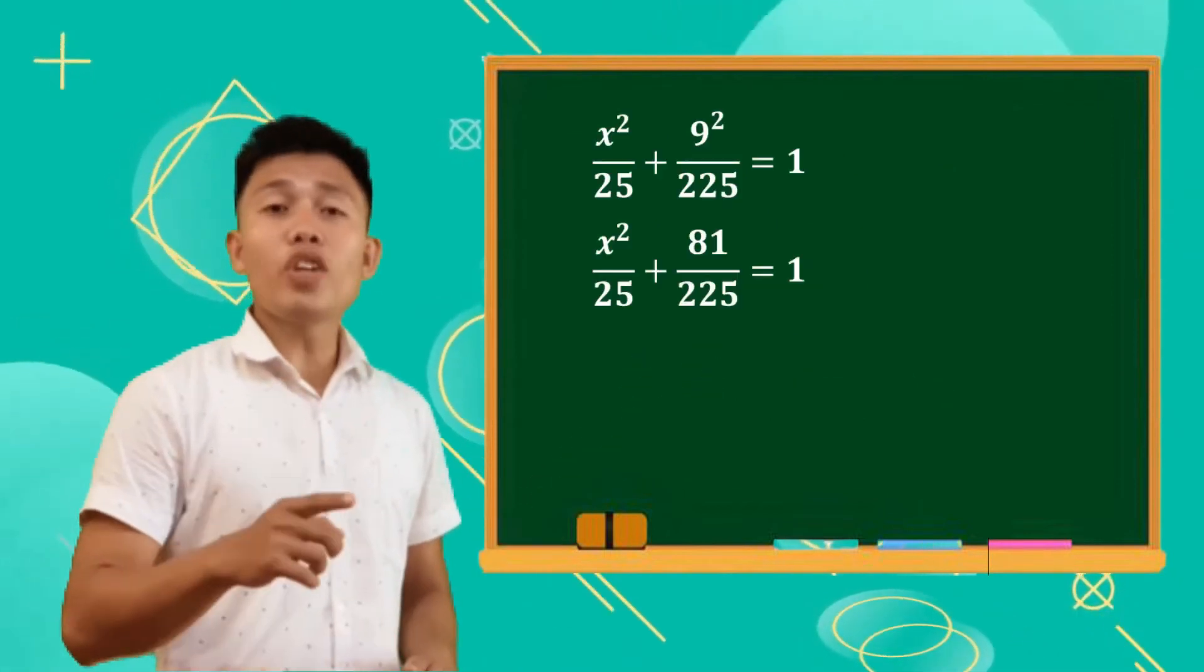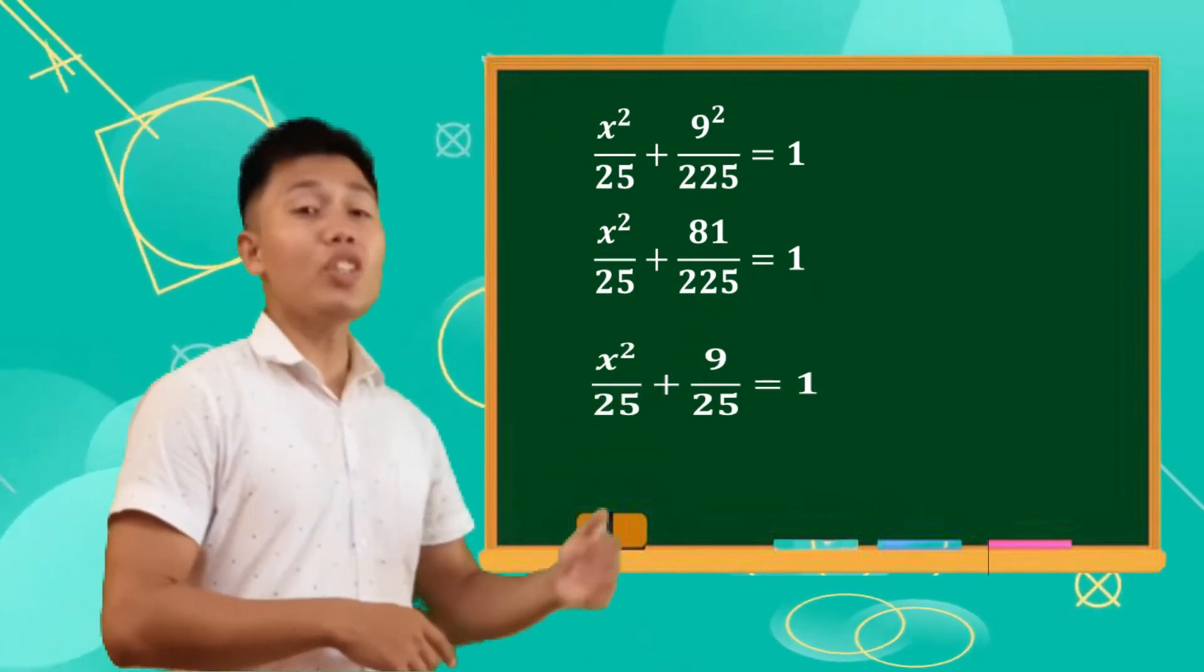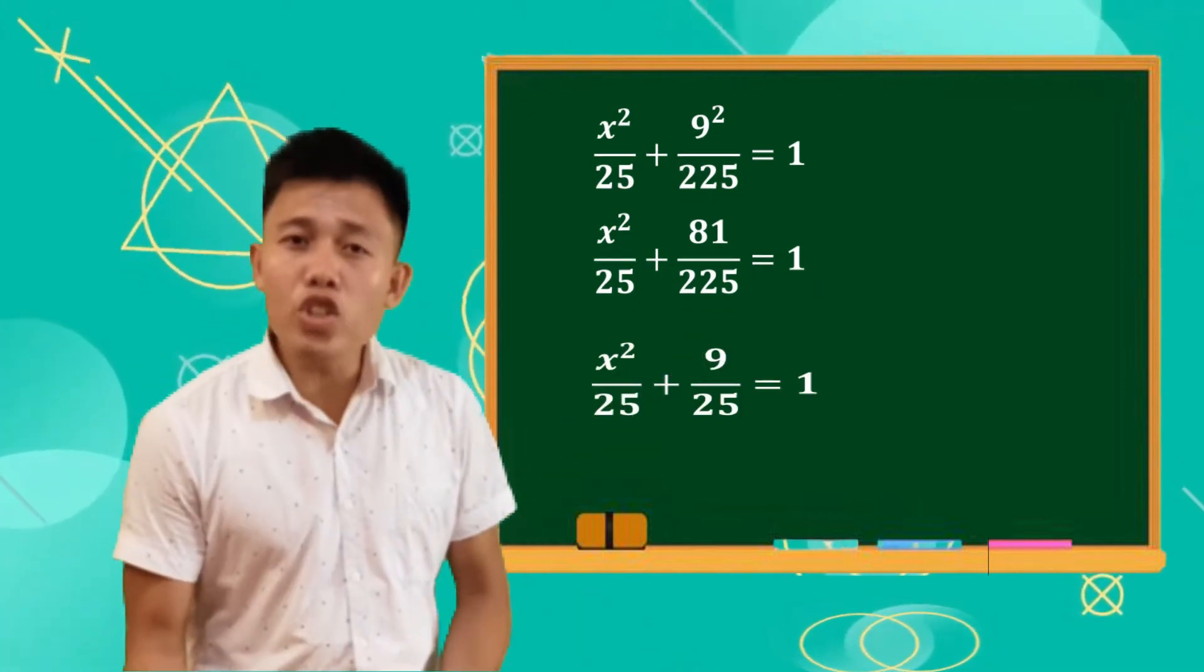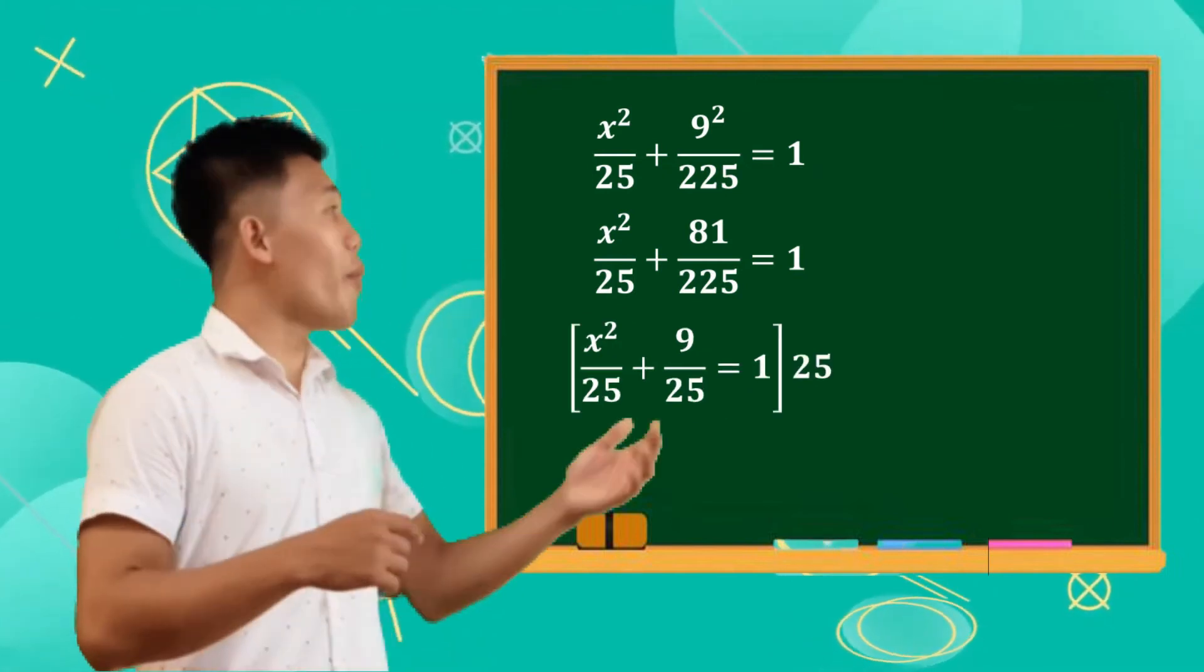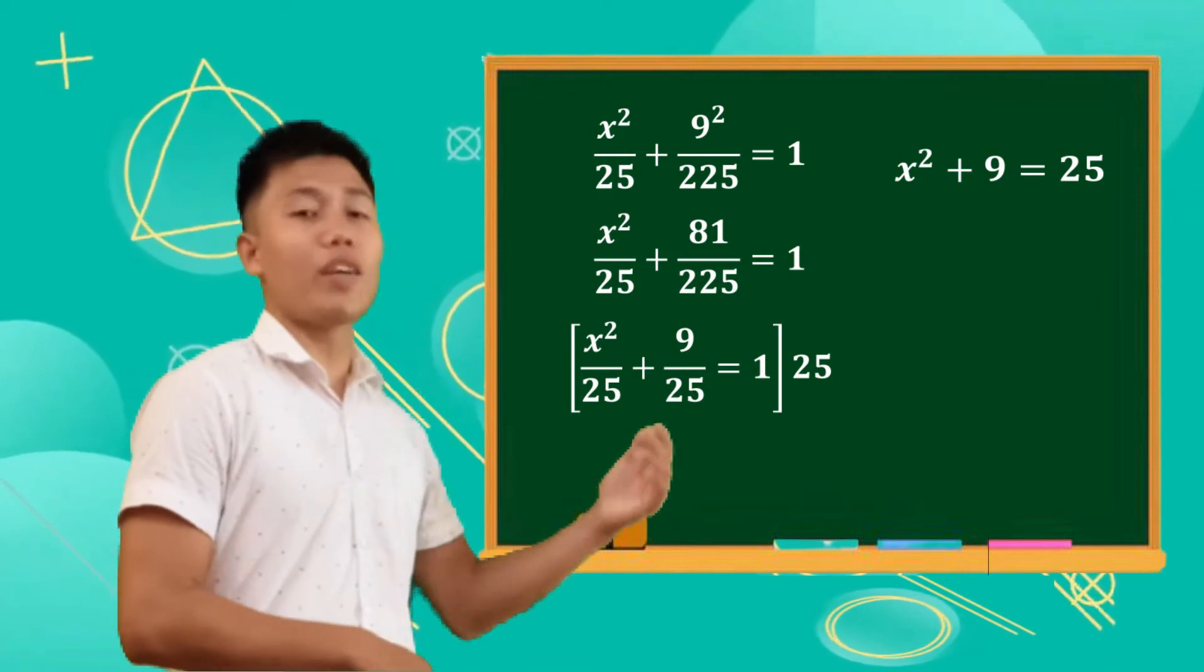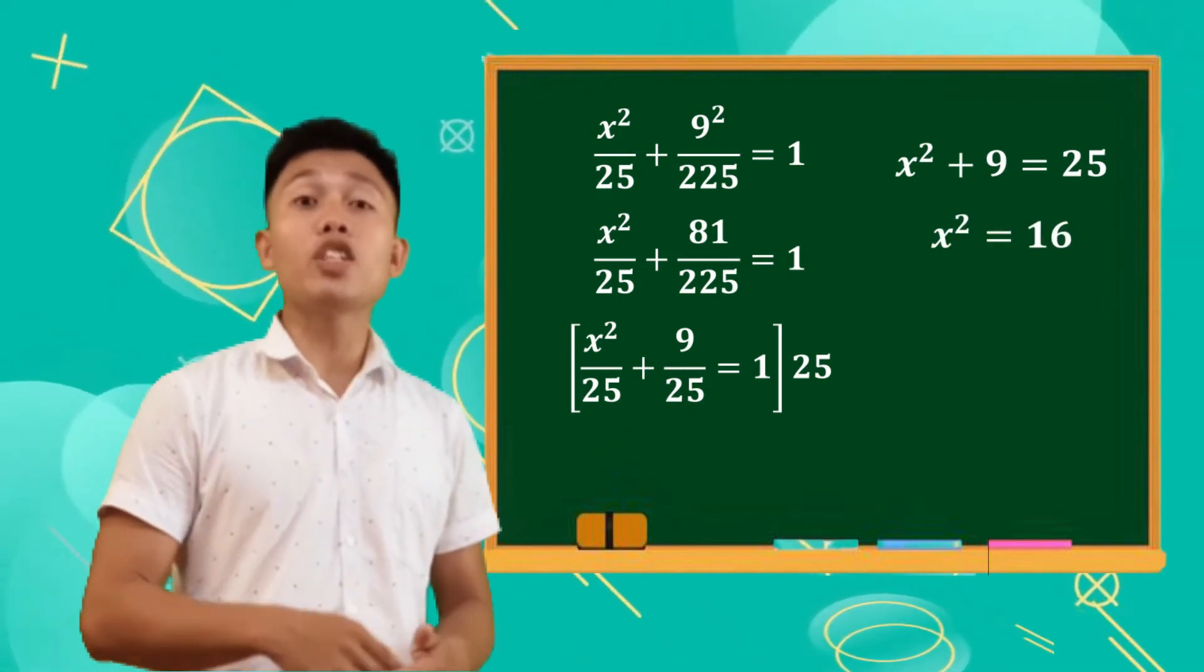Simplify the fraction 81 over 225 into its lowest term, it will become 9 over 25. Simplify the equation by multiplying both sides by 25, it will become x squared plus 9 equals 25. Combining like terms, it will become x squared equals 16.